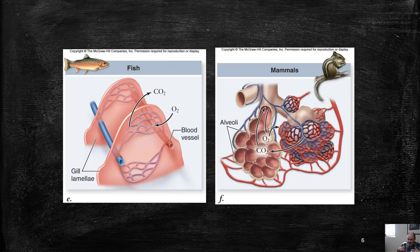In other organisms we have different gas exchange mechanisms. In fish, we have gills. If we zoom in on a gill, we see a specific structure we'll explain more later. And if we zoom in on lungs in mammals, we see a lot of surface area in the form of alveoli, all surrounded by tons of blood vessels. We'll see that in more detail later as well.